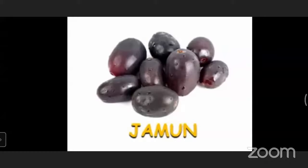The next fruit is jamun. It is available in the rainy season. Jamun is a good source of calcium and iron, and contains vitamin C. Its color is black and purple, and its shape is oval or circle. The spelling of jamun is J-A-M-U-N.